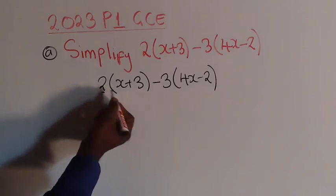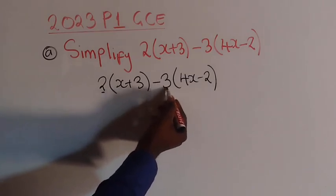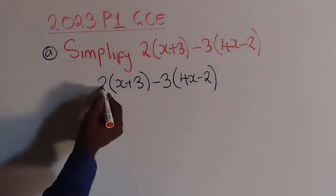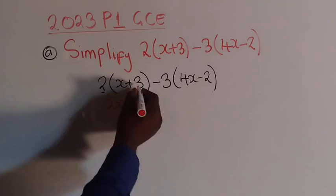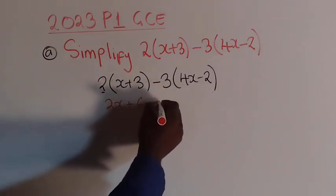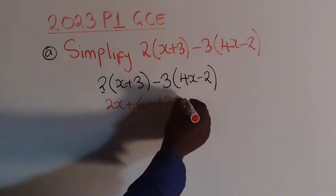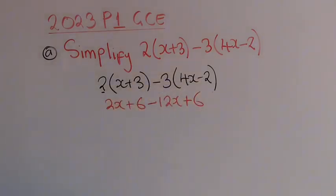So then we are going to open the brackets. So here you have a 2, so this 2 multiplies all the terms inside the brackets. Again, this 3 multiplies all the terms inside the brackets. So you are going to get something like this. We say 2 times x is 2x plus 2 times 3 is 6, then negative 3 times 4x, this would give us negative 12x, then negative times negative, positive 3 times 2 is 6.